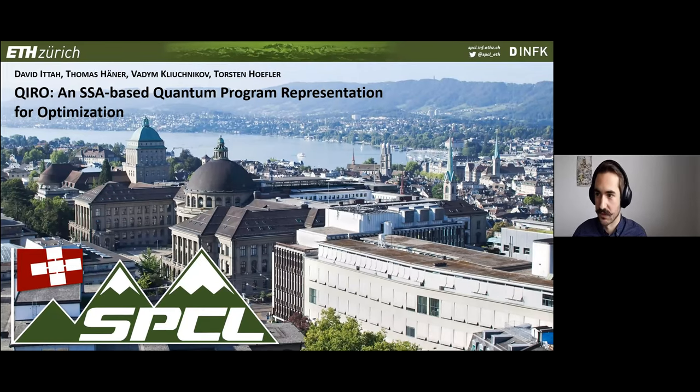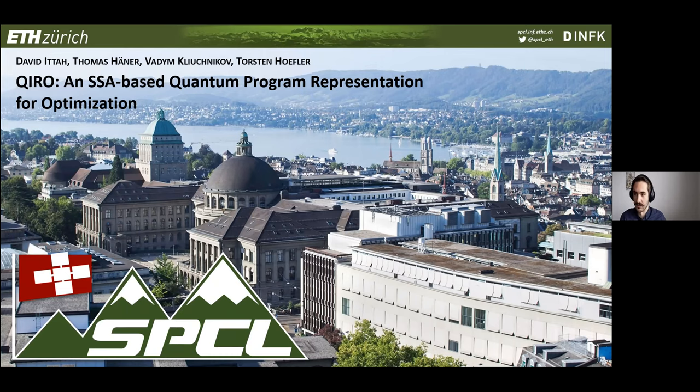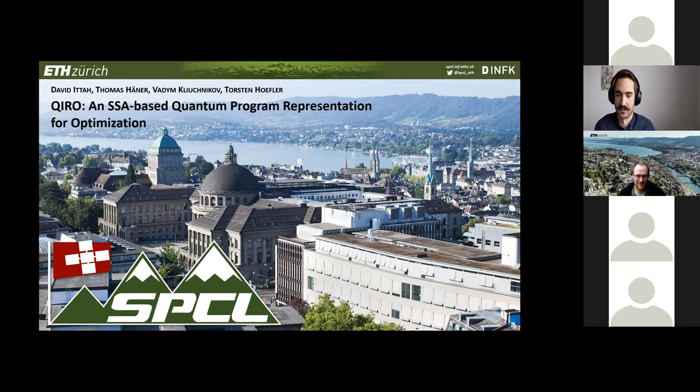So I want to talk about KIRO, which is an SSA-based intermediate representation that we designed specifically for quantum program optimization. Torsten already mentioned that we had some collaborators from Microsoft, Thomas Hanner and Vadim Klishnikov, and of course Torsten supervises us as well.